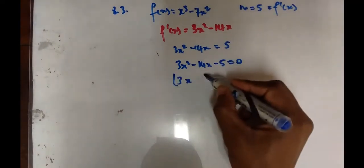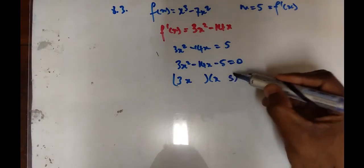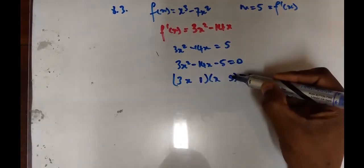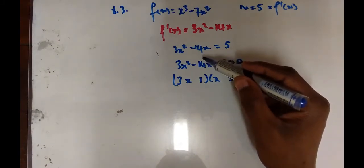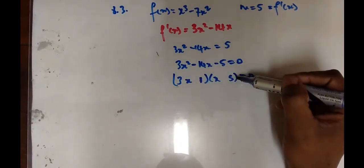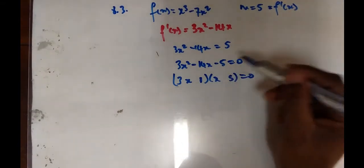Now we're going to factorize. The factors of 5 are just 5 and 1. The reason I put 5 here is because 14 can only be found if we multiply 3 and 5. If you multiply 3 and 1, you can't find 14.